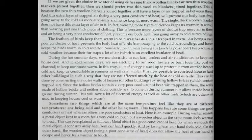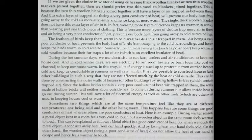Using two thin woolen blankets together is more effective than one thick blanket, because two woolen blankets trap more air molecules that completely block body heat from escaping. Similarly, the feathers of birds keep them warm in cold weather due to air trapped in the feathers, maintaining their body temperature and protecting them from cold.